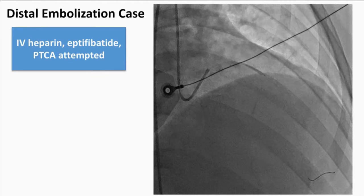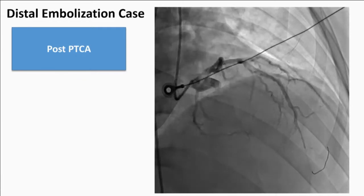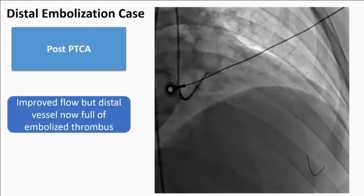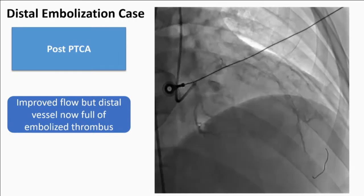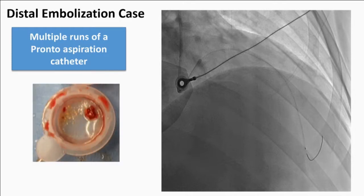The typical treatment we would administer to a heavy thrombotic lesion: IV heparin, eptifibatide, PTCA attempted. Post-angioplasty, you can see restoration of some flow. However, the distal vessel is now not filling and is likely full of thrombus. Multiple runs of an aspiration catheter were performed and some thrombin-rich clot was removed.